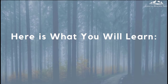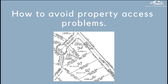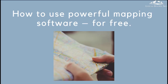Here's what you'll learn. How to find out if a property is located in a flood zone — that's very important and every land buyer needs to know how to do this. How to avoid access problems; in other words, how to ensure you can legally and physically get to your property. This is also essential for anyone buying land. How to use powerful mapping software and actually do it for free, so that you can see exactly where the property is, its terrain, and other very important characteristics which will impact your buying decision.